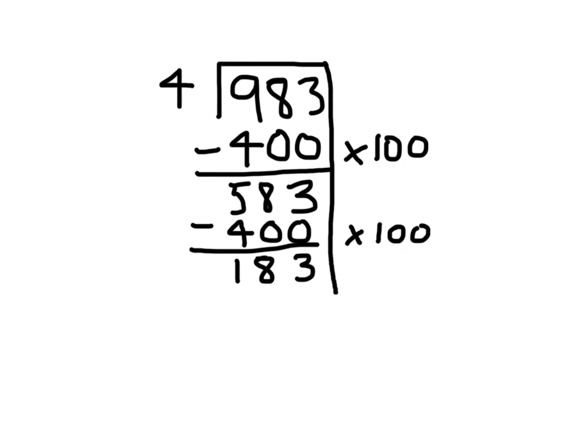Now, I can't choose 100 again, because that would give me 400, which is much larger than 183. So, I have to choose a different number. I could try 50, and I think 4 times 50 would be 200, so 50 is still too large. Why don't I try 4 times 25? I know 25 is a nice, friendly number to divide or multiply by. 4 times 25 equals 100. I subtract that off, and I'm left with 83.